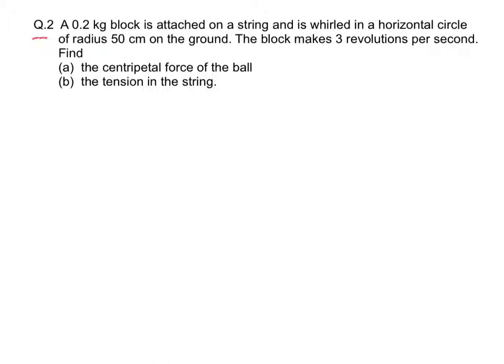Question 2: A 0.2 kg block is attached on a string and is whirled in a horizontal circle of radius 50 cm on the ground. The block makes three revolutions per second. Find the centripetal force of the ball and the tension in the string.